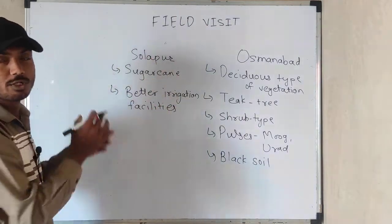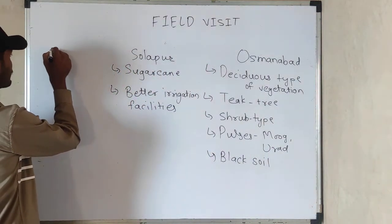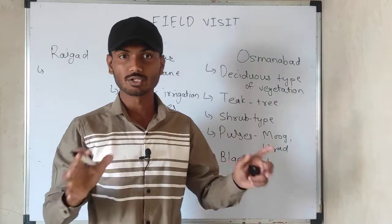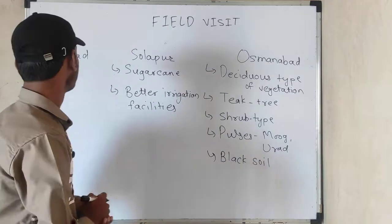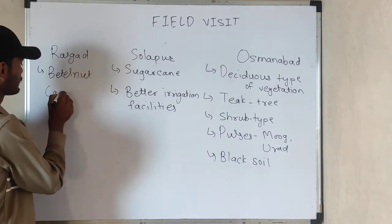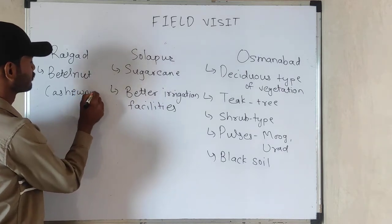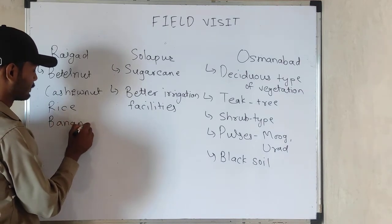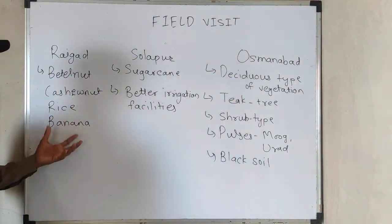Coming to the Raigad and Alibag region, we find tropical green type of vegetation with a lot of rainfall because of the windward side of the Western Ghats. Here we find betel nut, cashew nut, and rice cultivation. Many fruits are also grown in this region. So the vegetation pattern is: Usmanabad — deciduous with pulses; Solapur to Pune — sugarcane; Alibag — betel nut, cashew nut, rice, and banana.